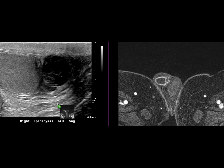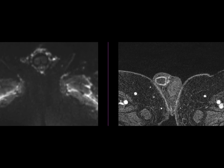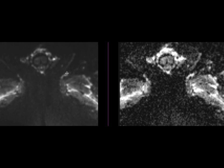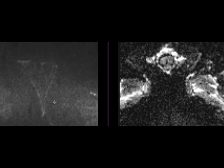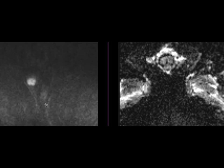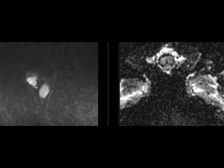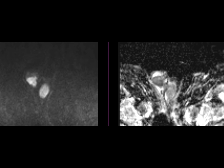We also did diffusion-weighted images in this case. On the high B-value images, the abscess is hyperintense, and it's hypointense on the ADC images, as would be expected for an abscess. This is a nice case of epididymitis with an associated abscess seen on both ultrasound and MRI.